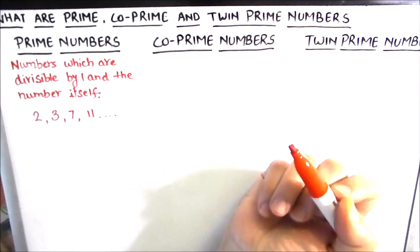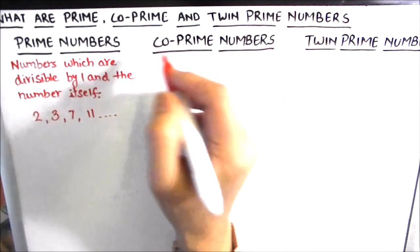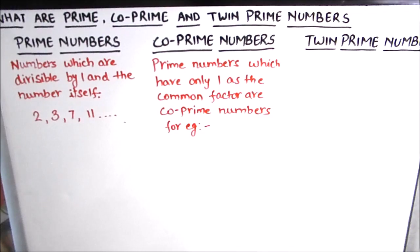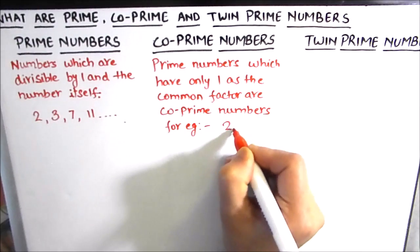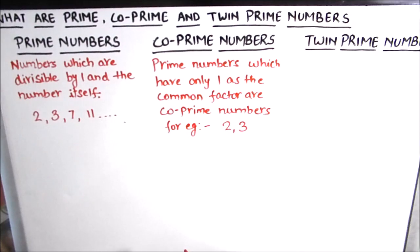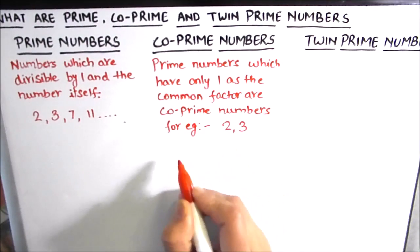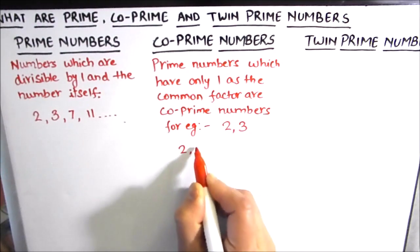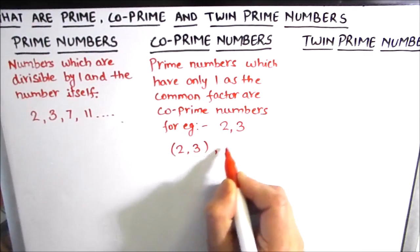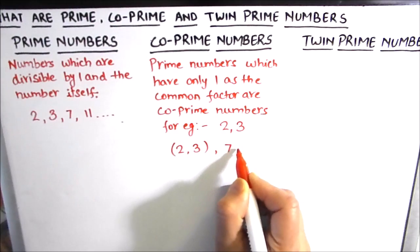Next we have co-prime numbers. Co-prime numbers are numbers which have only 1 as their common factor. For example, we have two prime numbers 2 and 3 — these two have only 1 as the common factor between them, so 2 and 3 are co-prime numbers. Another example of co-prime numbers is 7 and 11.